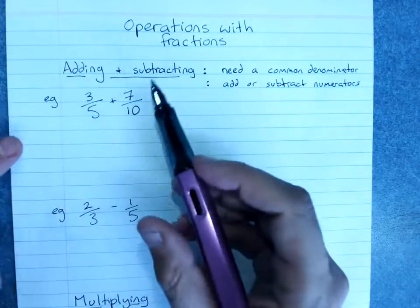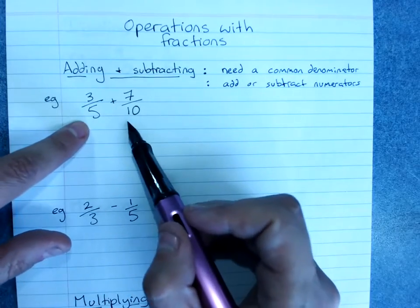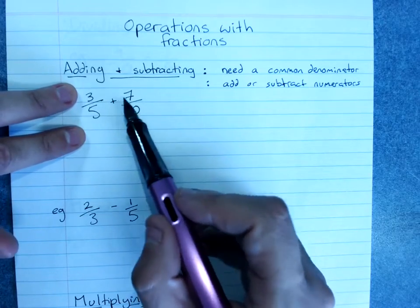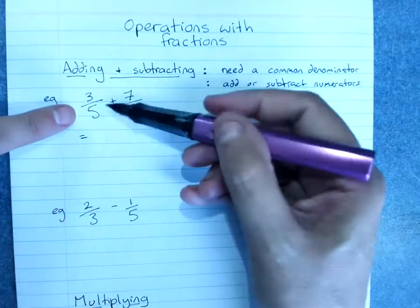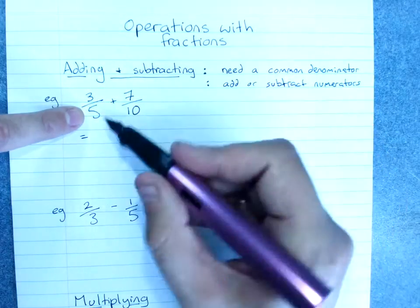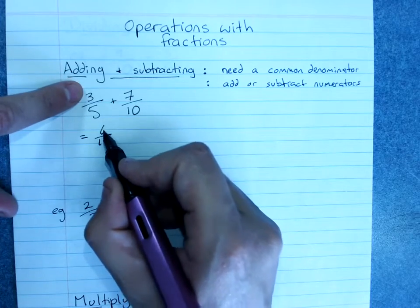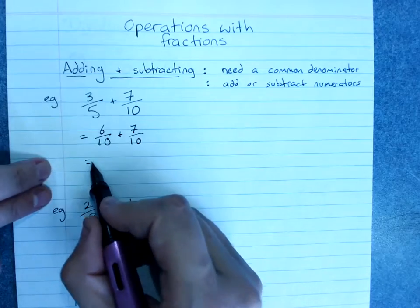So we look at these we work out that our lowest common multiple of 10 and 5 is 10. So we'll need to get our 3 fifths to be something over 10. We rewrite our fraction. 5 times 2 would give me 10. So I need 3 times 2 is 6 and I've got 6 over 10 plus 7 over 10.